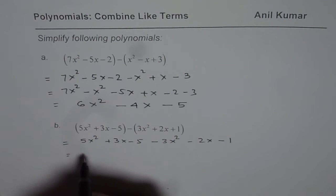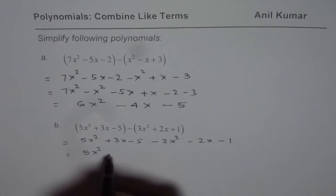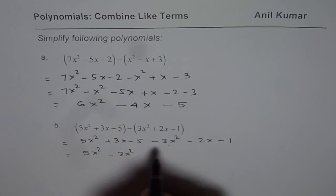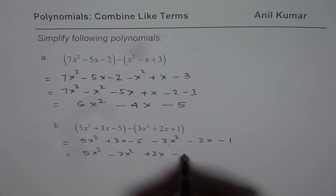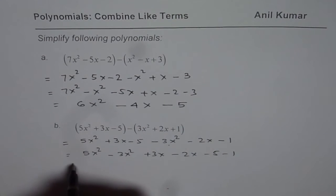Bring the like terms together. 5x squared minus 3x squared. That is this. Then we have plus 3x minus 2x minus 5 minus 1.